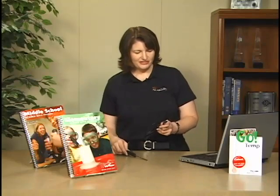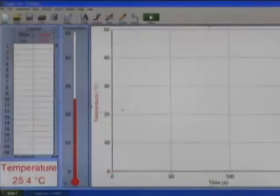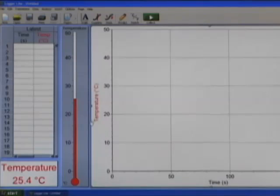When you use the GoTemp, you're going to plug it into your computer's USB port, launch the Logger Lite software, and you'll automatically see a graph, a data table, a thermometer meter, and a digital meter all on your computer screen so students can see all the different ways that you can represent temperature.